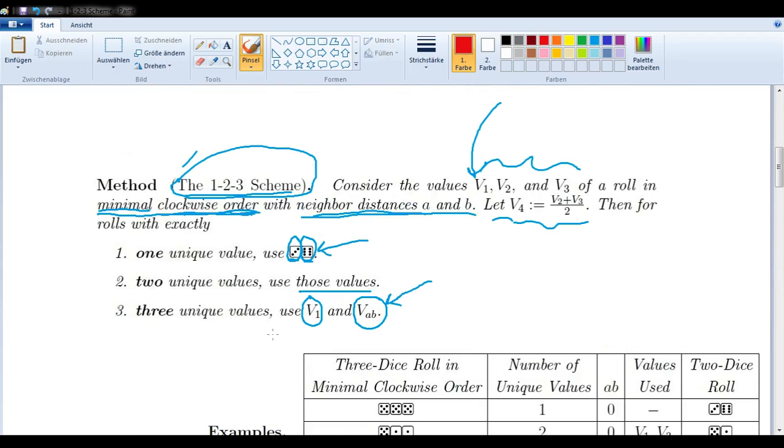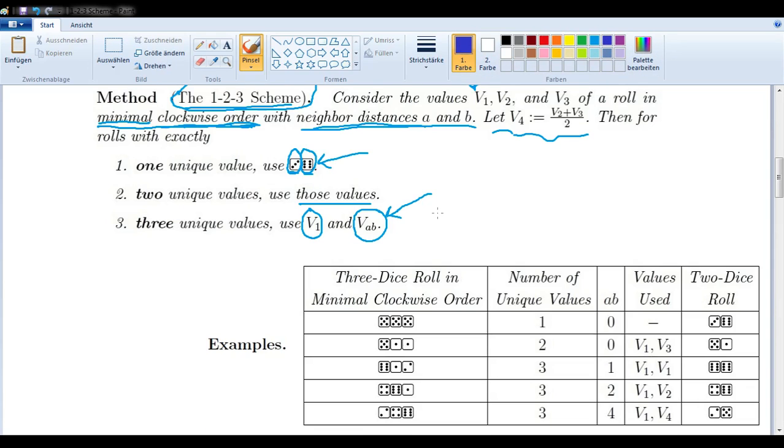So now we have a good understanding of what all of that stuff means. Let's return to our examples. If we roll a 5,5,5, we only have one unique value, so that must be a 3,6. If we roll a 5,1,1, for example, we have two unique values, so we simply use those. Five and one.